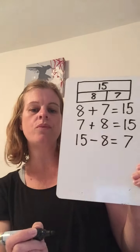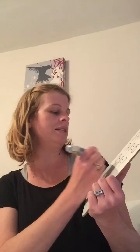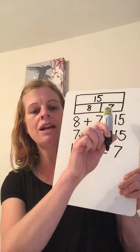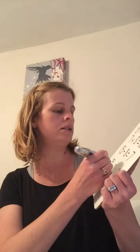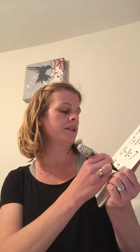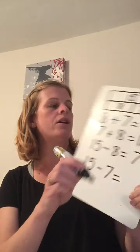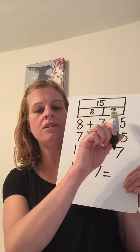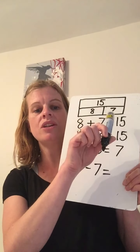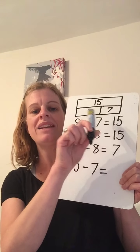Let's do another subtraction. Start with our whole — start with 15. This time I'm going to subtract 7, because it's one of my parts. And I know if I subtract 7, I'm going to be left with 8, because I know that 7 add 8 is equal to 15.